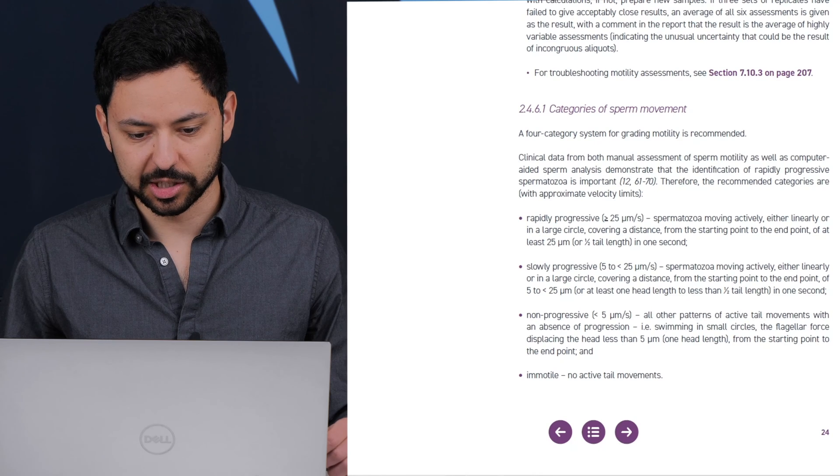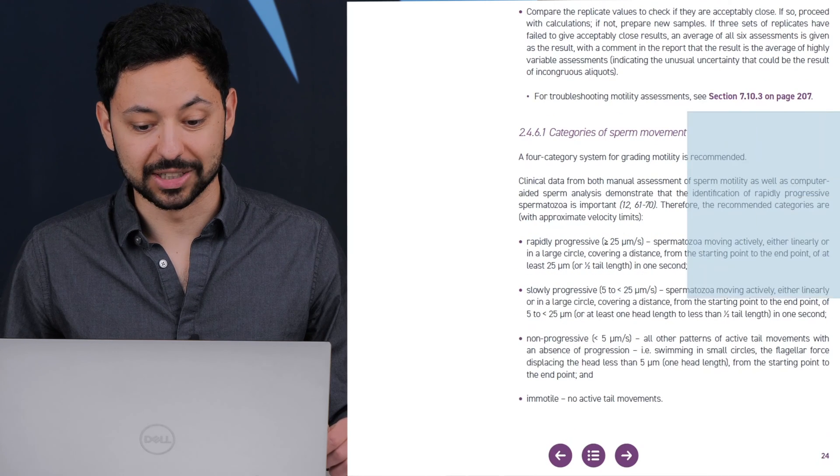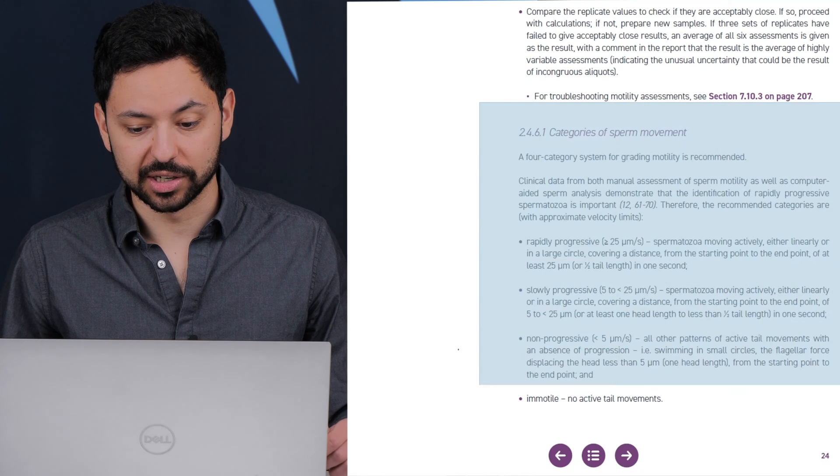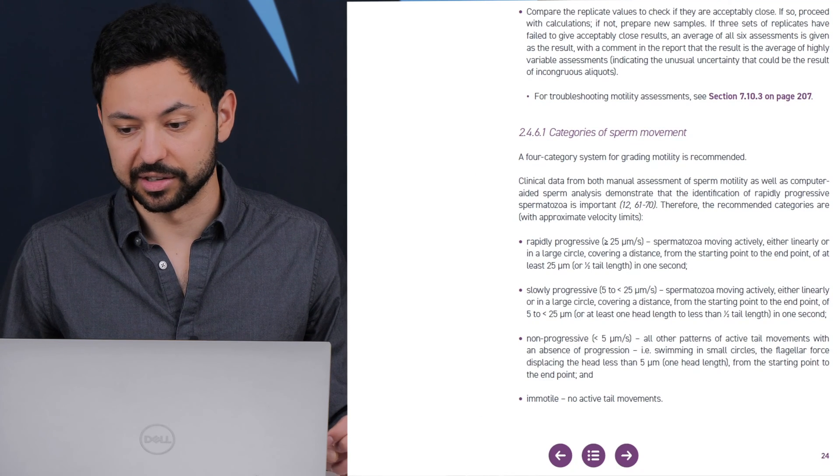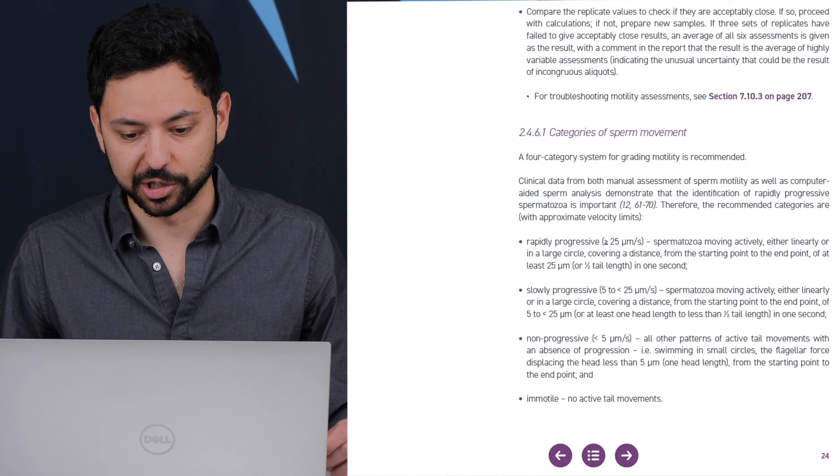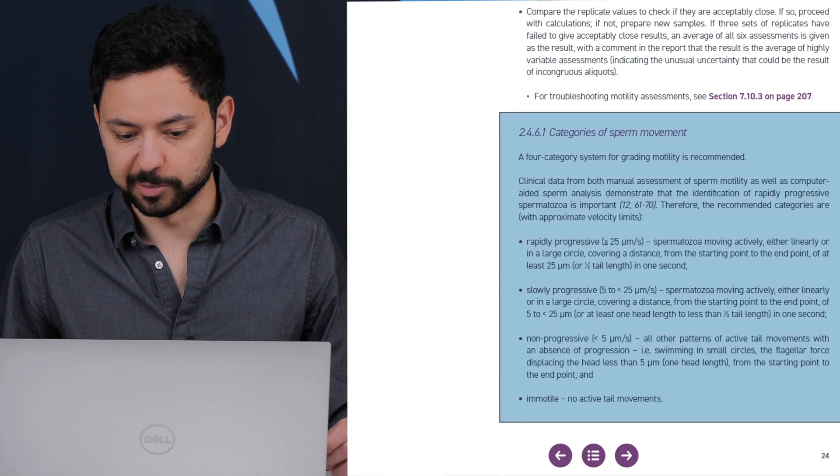If you take a look at the World Health Organization document, they have a couple of categories for assessing the sperm movement that you have going on here. And this is significantly simpler to do than sperm counting. So you could absolutely follow this and make a determination on your own of what your sperm movement metrics are.